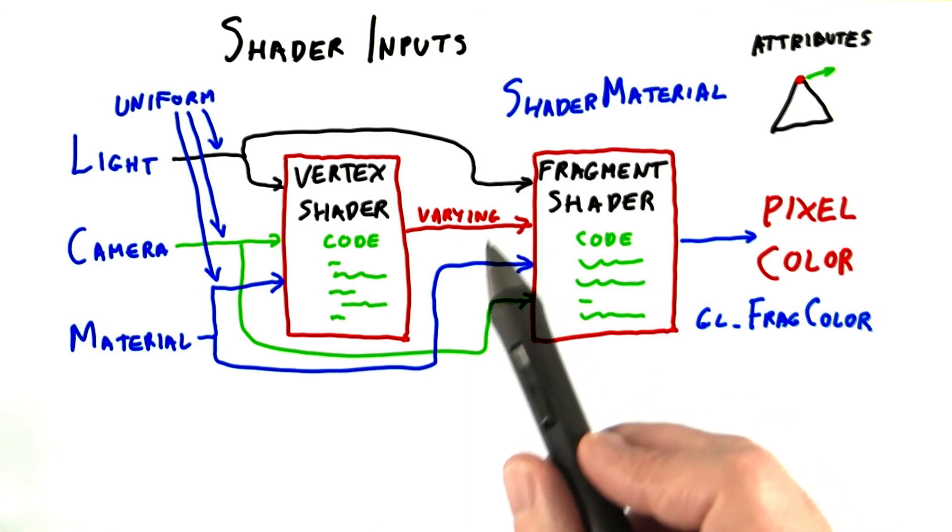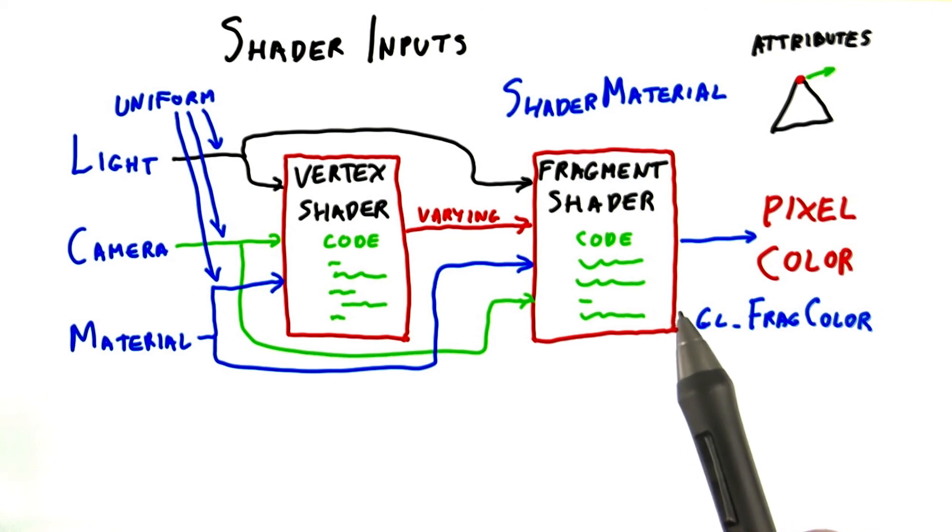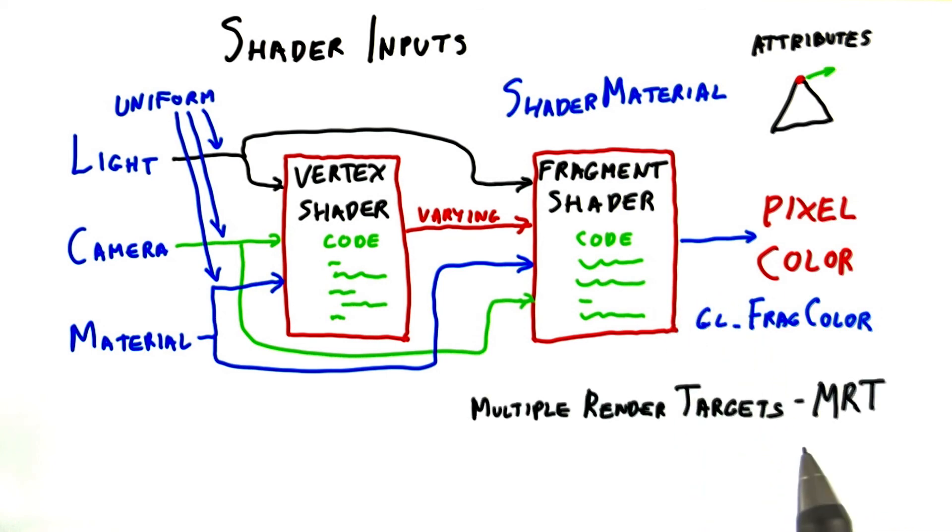The fragment shader also takes uniform data as inputs. The fragment shader then, as a minimum, outputs a fragment color with the name gl_FragColor. I say as a minimum because in fact, in many graphics APIs, the fragment shader can output to a number of images at one time. This is called MRT, for multiple render targets. Targets is another name for output images.